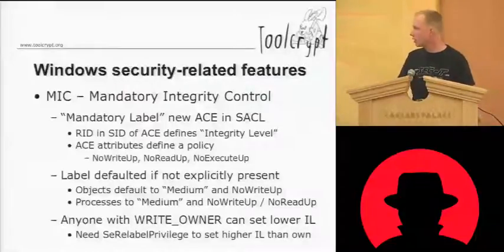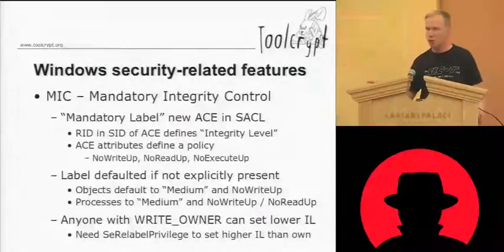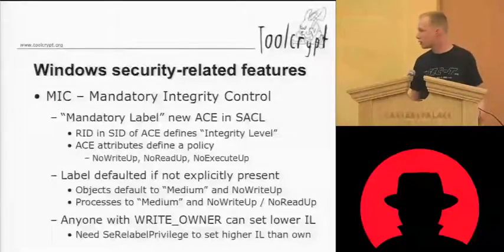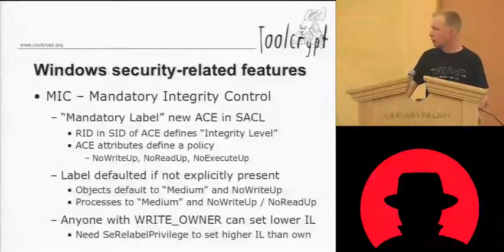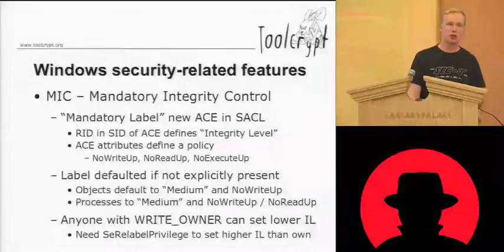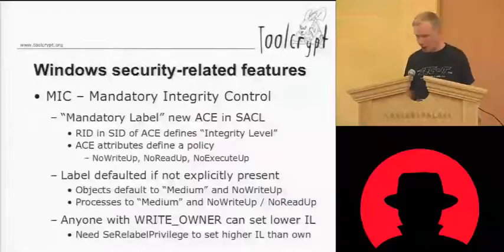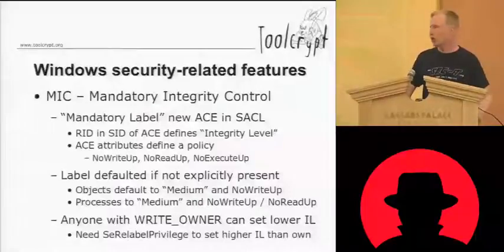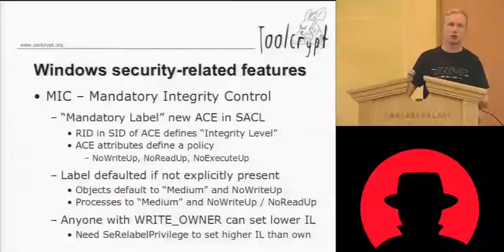Anybody who can set permissions on a resource can set a lower integrity level on it than their own process or thread is running as. To raise the integrity level of a resource or process, you need the specific SE_RELABEL privilege. This can be used to strengthen the sandboxing of a process running untrusted code — ensuring that if somebody gains execution within that process, they wouldn't be able to write to system resources or violate whatever policy you've chosen to implement.